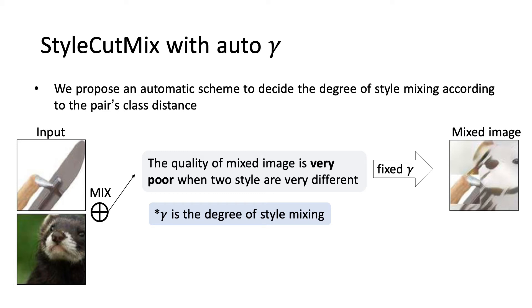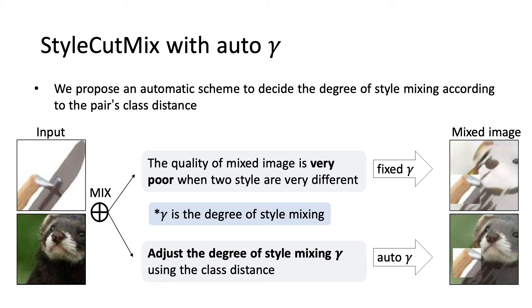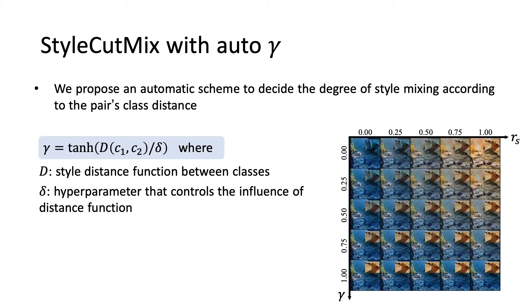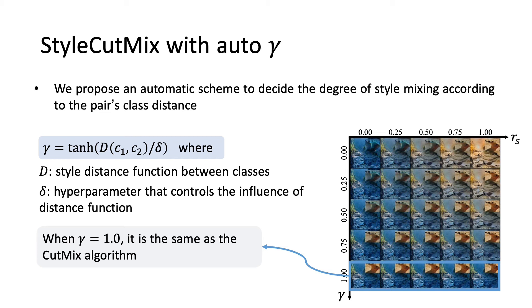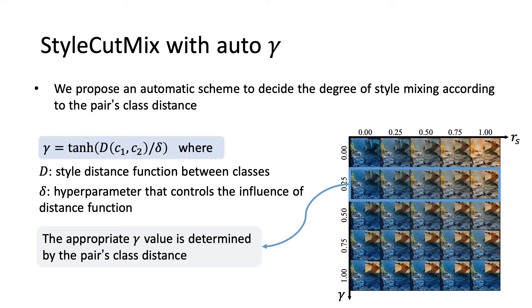We propose an automatic scheme to decide the degree of style mixing. When there is the greatest style difference between two images, as you can see in this figure, the quality of the image is degraded. The intensity of style mixing is adjusted by the distance calculated between the classes, and is controlled via mixing parameter gamma. Further details regarding the distance function D for calculating gamma between two classes can be found in the paper. The figure on the right shows the best image of StyleCutMix according to gamma. When gamma is 1, due to considerable distance between two classes, the style transfer is not performed, making it the same as the CutMix algorithm. The appropriate value for gamma is determined by the class distance and a hyperparameter that controls the influence of the distance function.